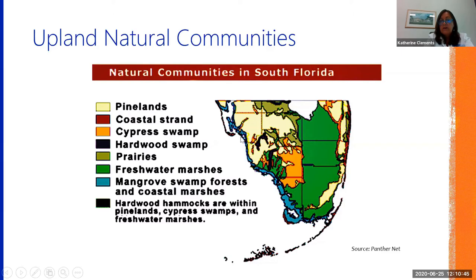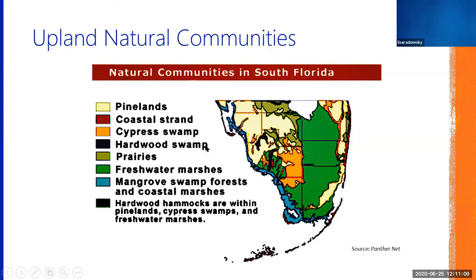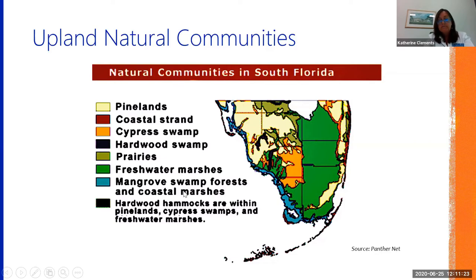Here's Sarasota County. As you can see, it is mostly characterized in terms of upland environments by pinelands. We do have some scrubby flatwoods in Oscar Shearer and a few of our county parks. We also have a lot of mangrove forest along our coastal areas, some hardwood hammocks, hardwood swamps, and a little bit of dry prairie in Myakka. I will talk about some of those upland areas today.